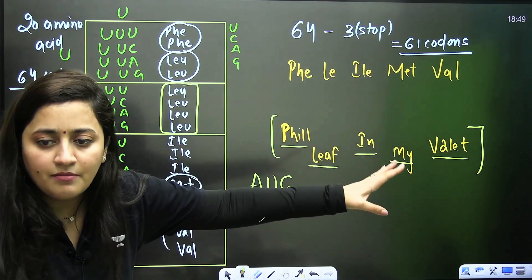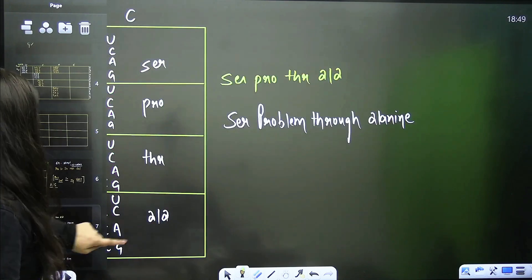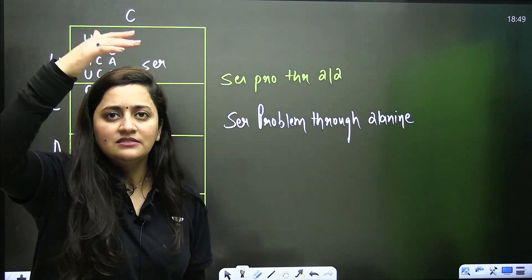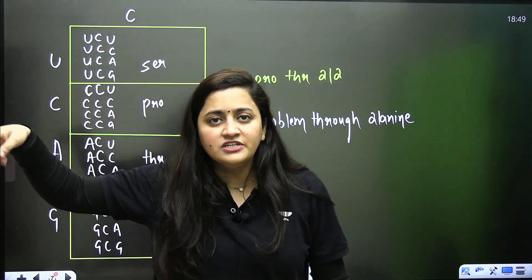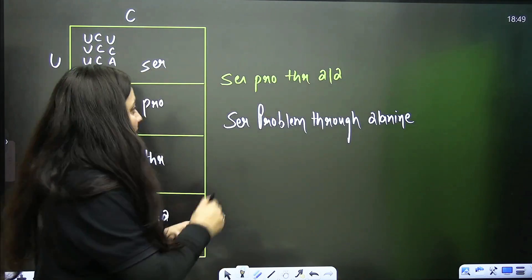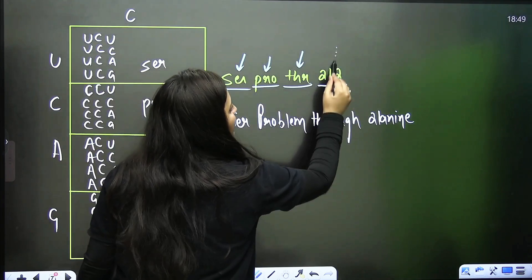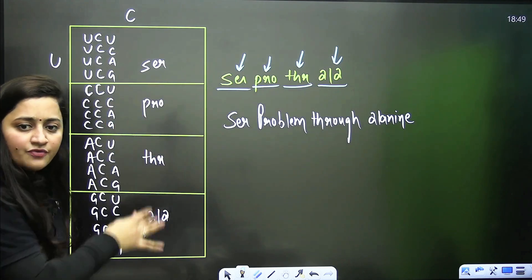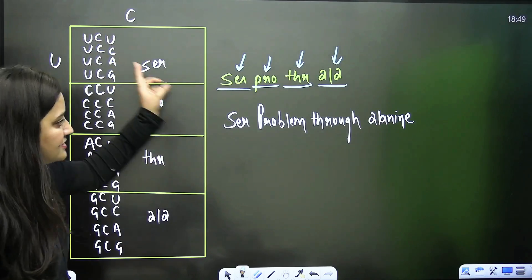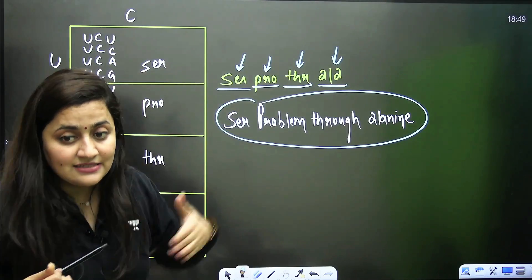For the second column, the trick is: 'Sir Pro Tharala.' Sir = serine, Pro = proline, Thar = threonine, Ala = alanine. Each of these has four codons: four serine, four proline, four threonine, four alanine. You can also remember it as 'Sir Problem Through Alanine,' but 'Sir Pro Tharala' is simpler.